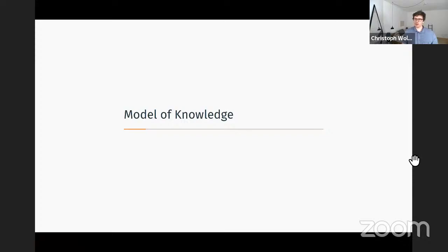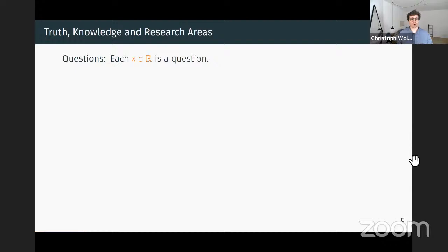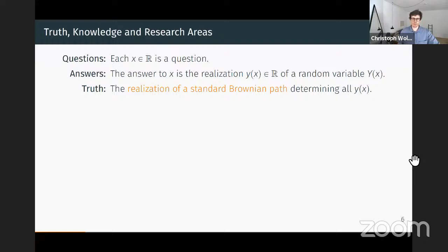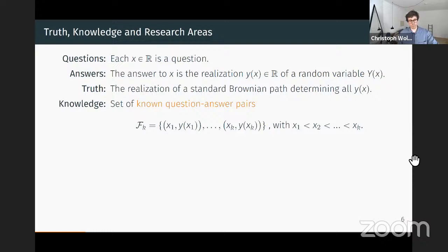Let's begin with the model of knowledge. We think about every potential research question as being on the real line—every number on the real line is a question you can ask. Every question has an answer: the answer to question X, denoted Y(X), is a realization of a random variable also on the real line. The truth—the realization of all answers—is given by a standard Brownian motion over the entire real line. Knowledge is the set of questions X1 to XK to which we already know the answers.